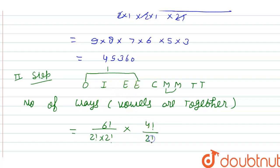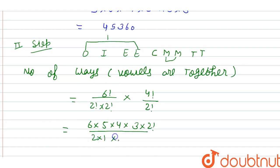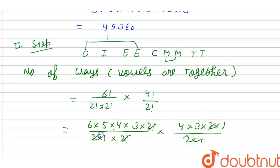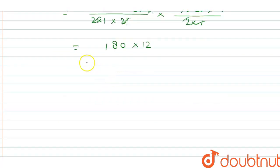Calculate: 6! = 6 × 5 × 4 × 3 × 2! divided by (2×1 × 2!) × 4 × 3 × 2 × 1 divided by 2×1. After cancellations, 2! terms cancel and 2 × 4 cancels twice, leaving 6 × 5 × 3 × 12 = 2160.